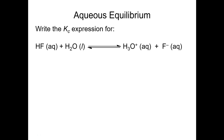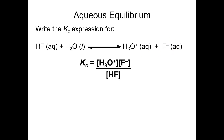Here's an example: the reaction of the weak acid hydrofluoric acid with water — HF + H₂O ⇌ H₃O⁺ + F⁻. The Kc expression is Kc = [H₃O⁺][F⁻] / [HF], because we don't include water in the equilibrium constant expression.